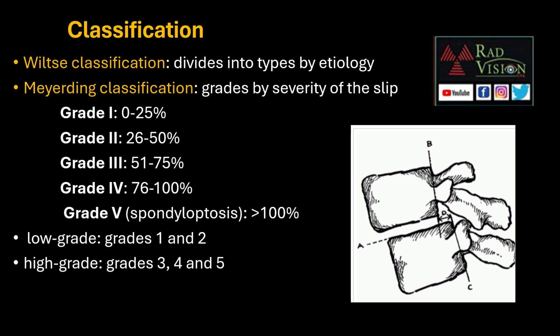Grades 1 and 2 are considered low grades, while Grades 3, 4, and 5 are considered high grades. To measure severity, first draw a horizontal line along the superior end plate of the inferior vertebra. Then two parallel lines are drawn along the posterior cortex of the superior and inferior vertebral bodies, and the distance between these two lines is measured at the level of the superior end plate.